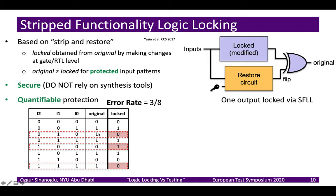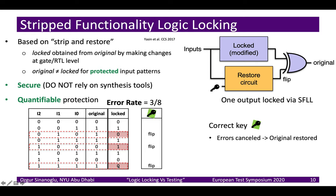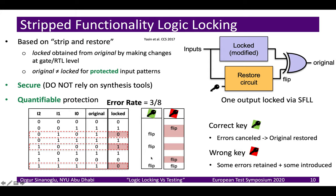In this example, the error rate is 3 out of 8, because for three input patterns the original and locked netlists produce different results. When the correct key is in place, these differences are nullified by performing flips on the protected input patterns. When an incorrect key is used, these flips occur at wrong positions and we don't get perfect recovery of functionality — correct key works fine, incorrect key does not.